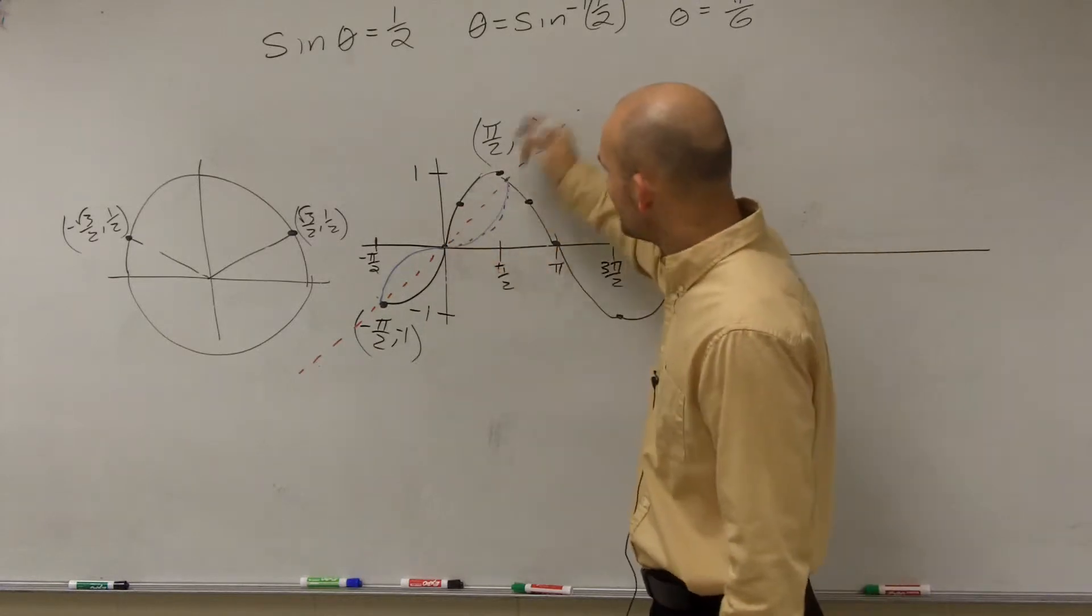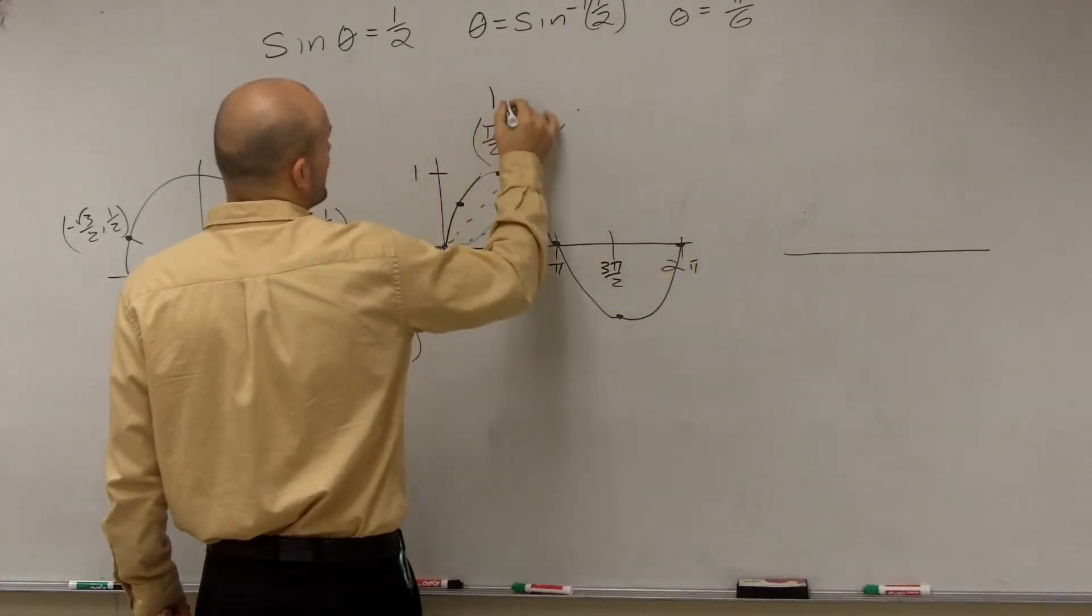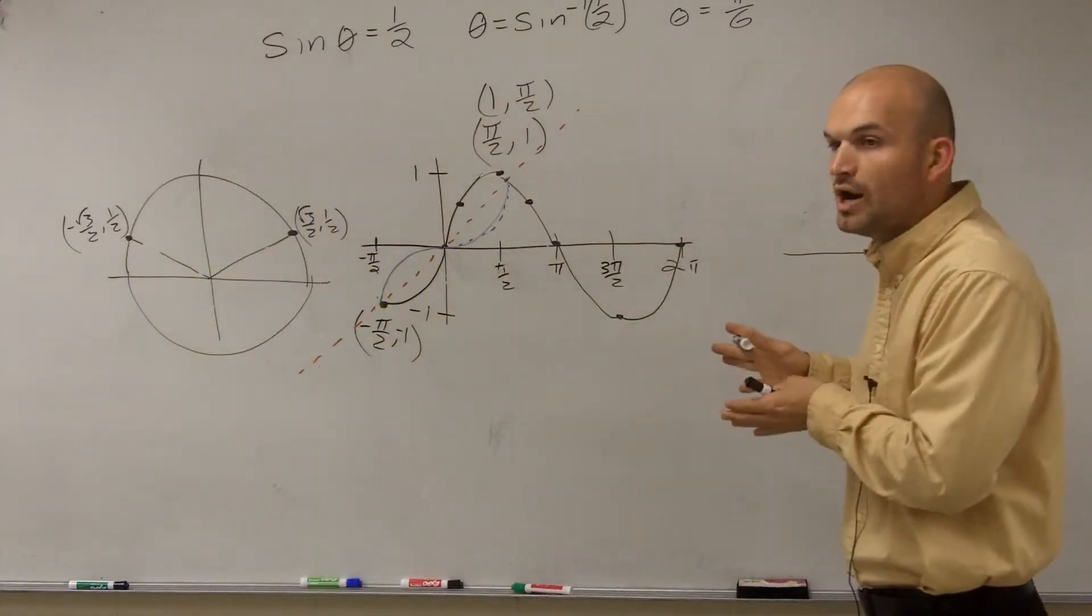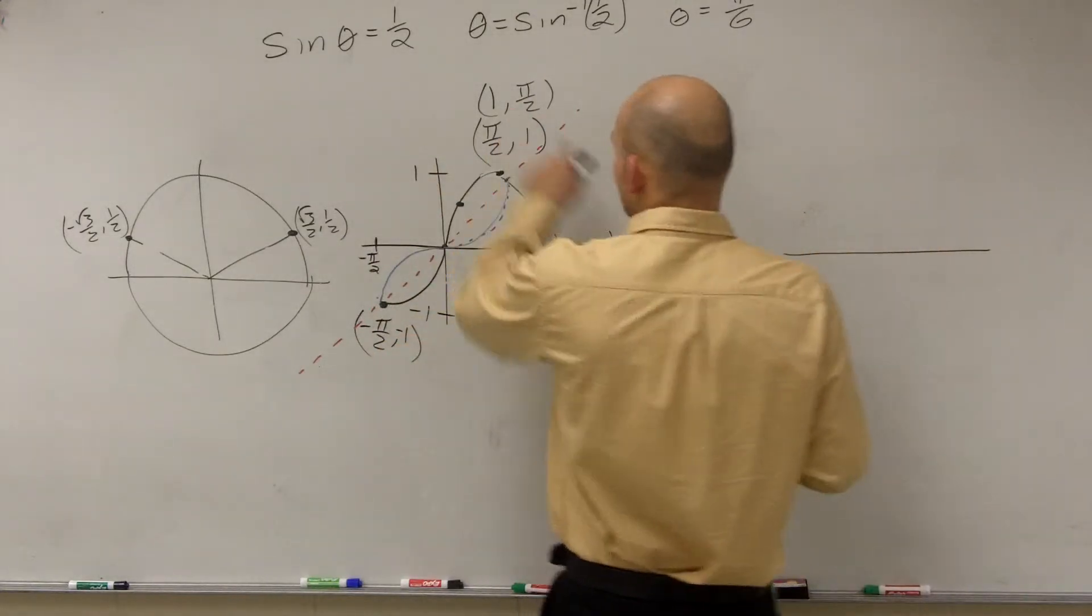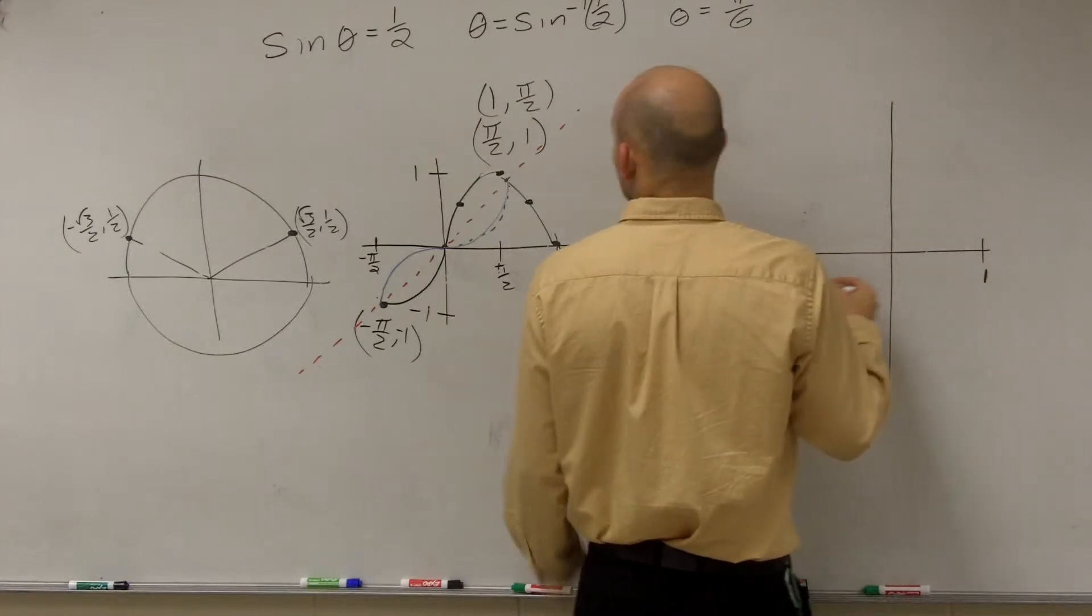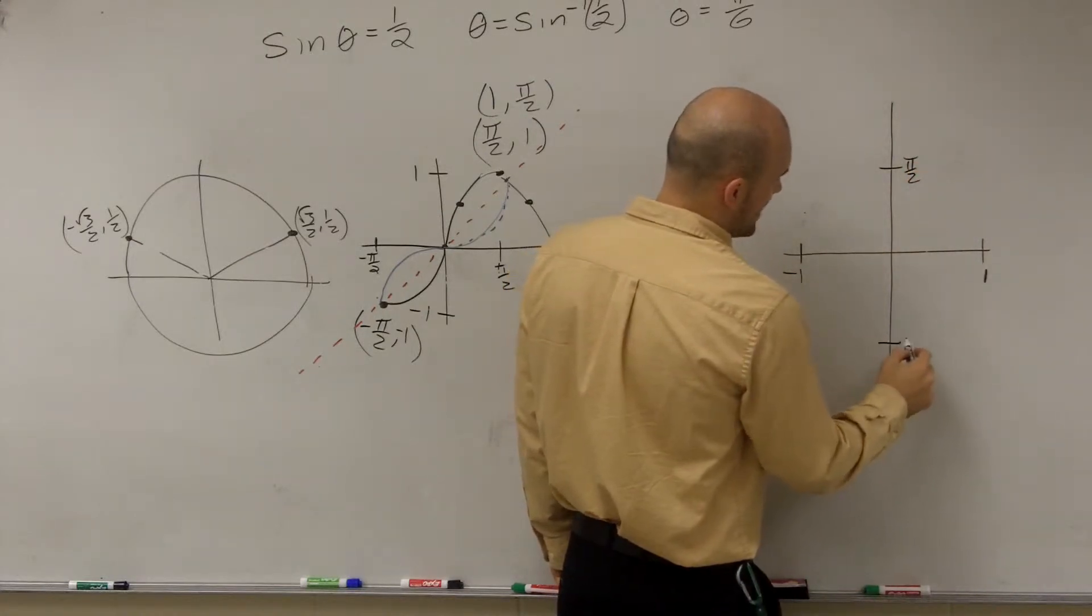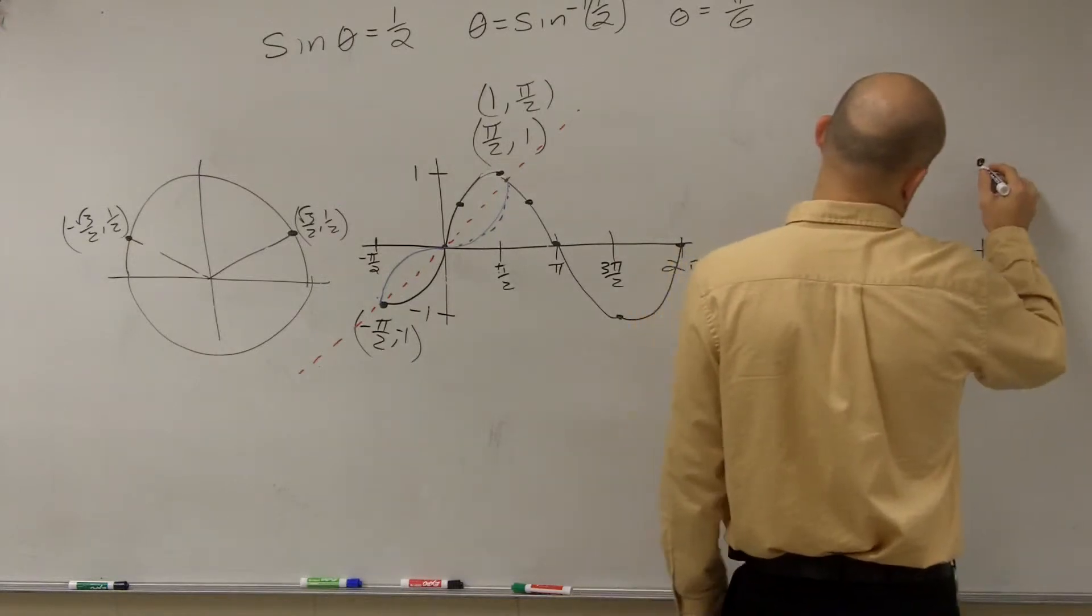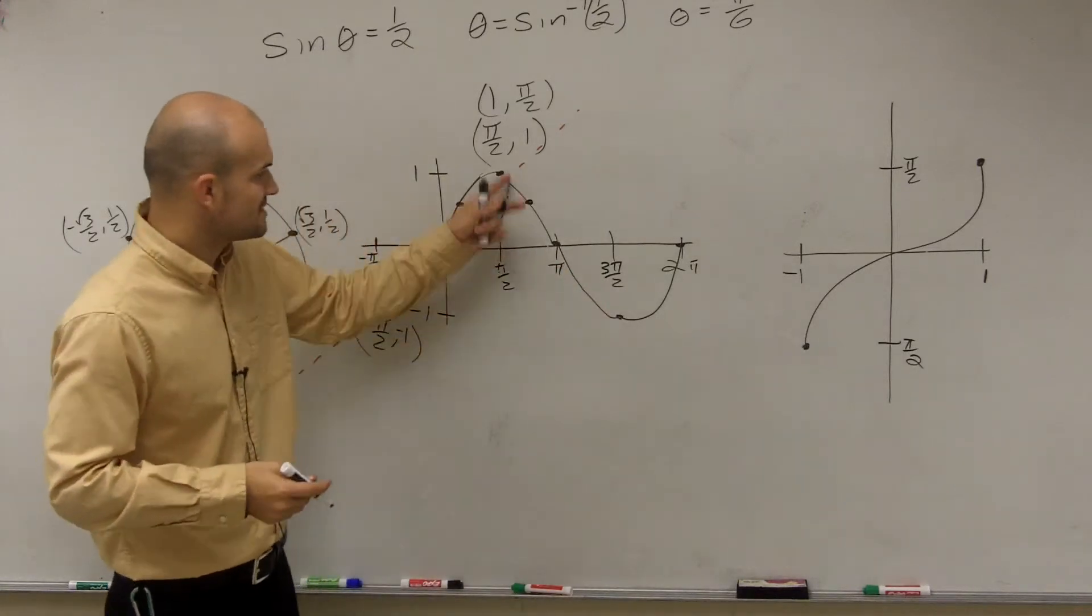Let's graph this on a different set of axes so we can see it more cleanly. If I swap the x and y coordinates, I'm going to have 1 and then go up to π/2, let's say π/2 is right here. Then go down to -1 and over to -π/2. Our graph now looks something like this.